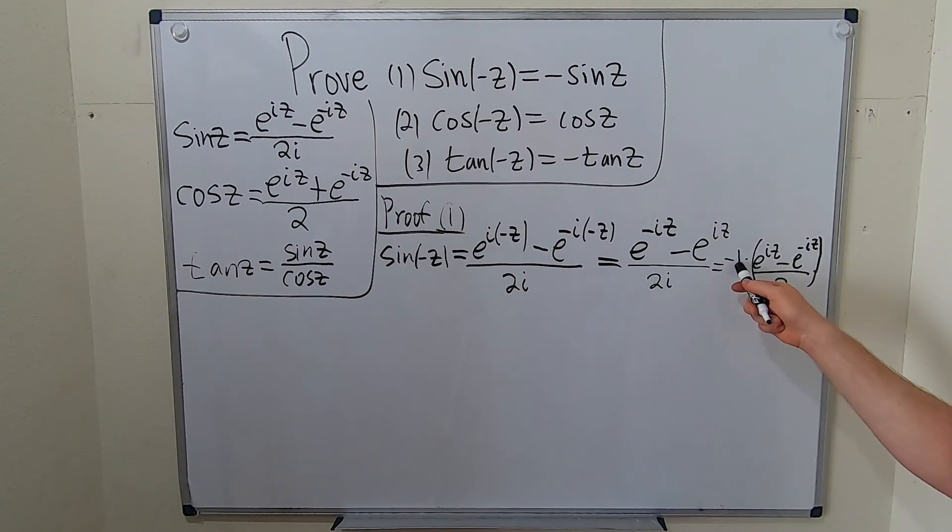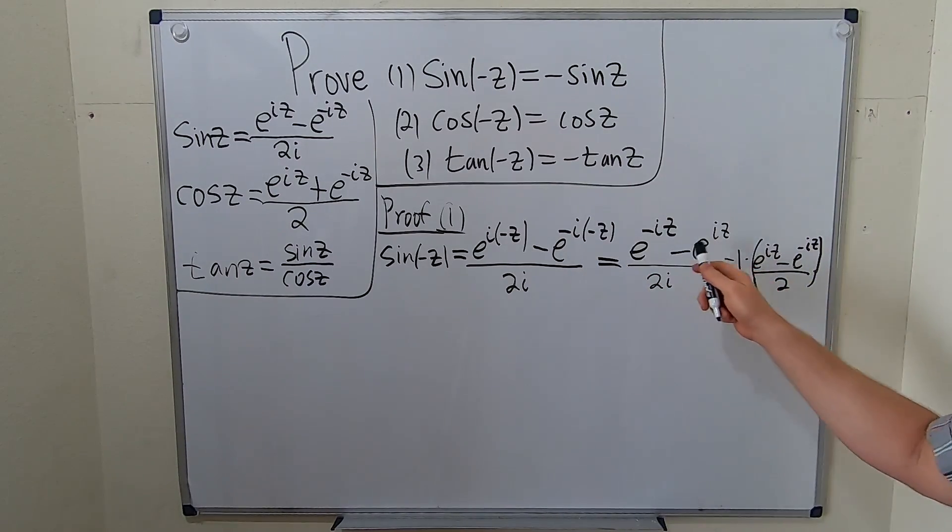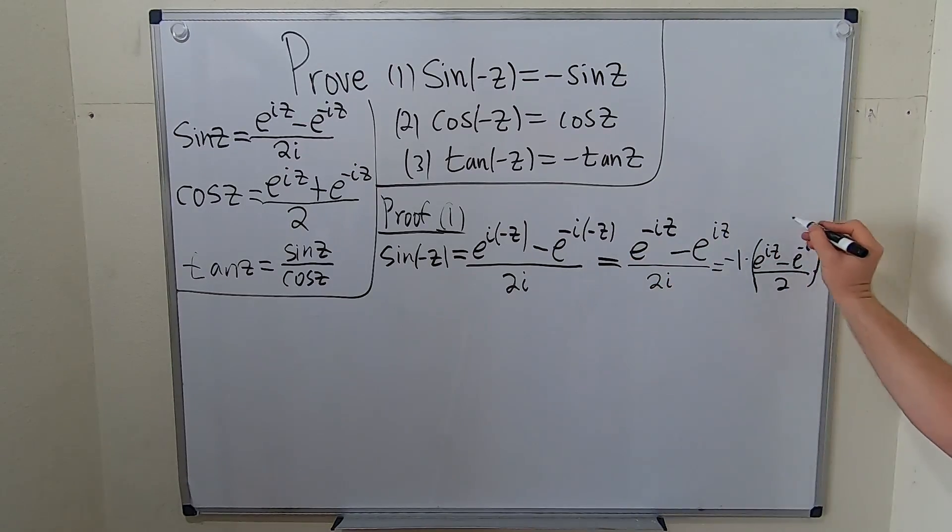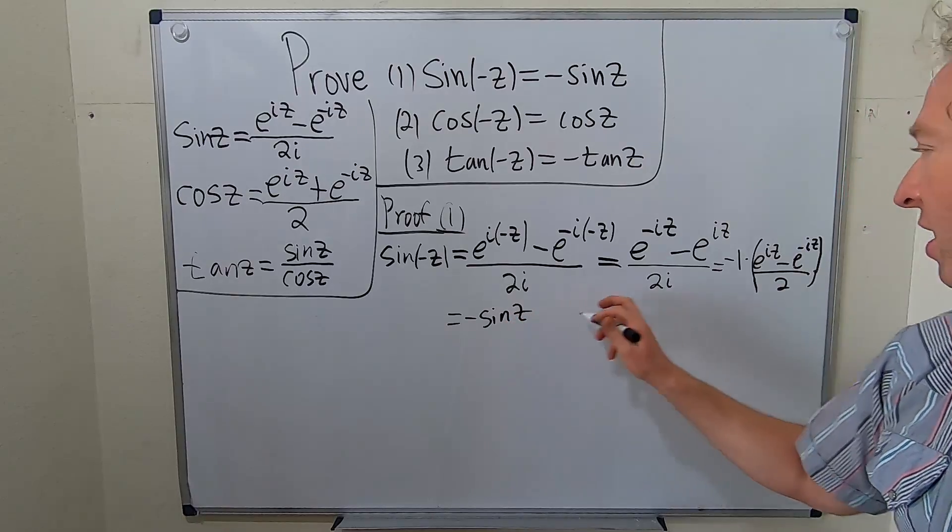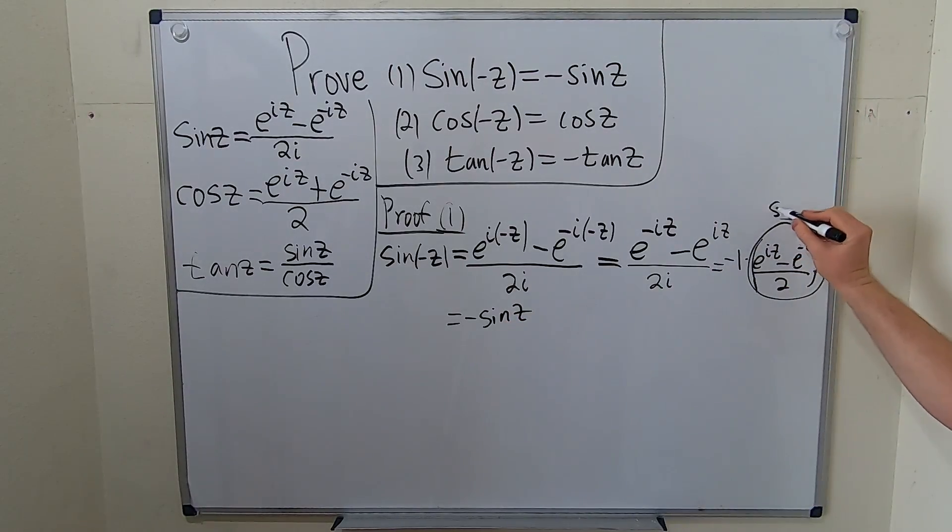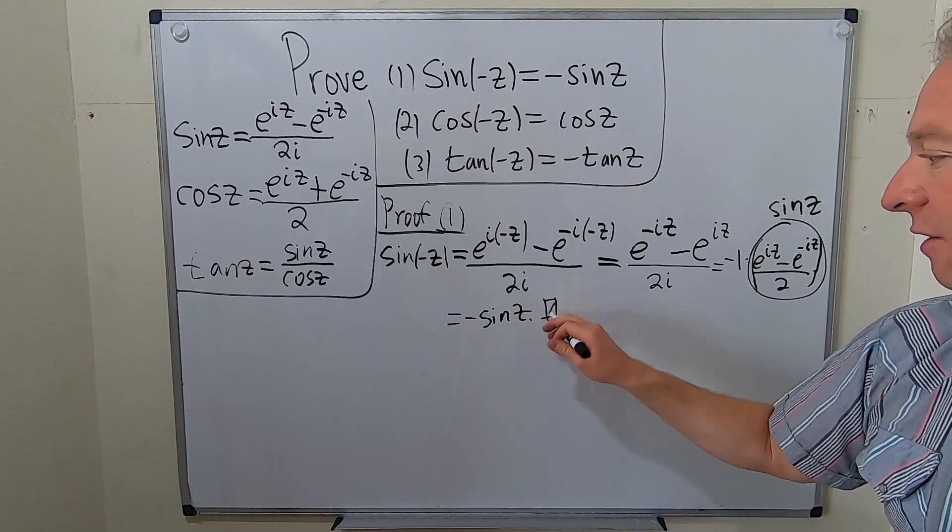Because if we do negative one times negative and negative is positive, right? Negative times this is this. Looks good. This is sine z, right? So this is equal to negative sine z. This is precisely the definition of sine z. You can see it over here. So that completes the first proof.